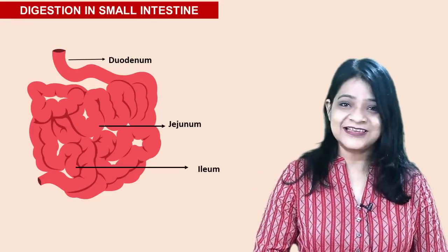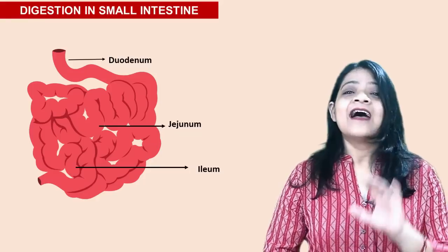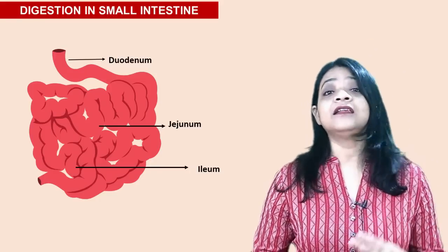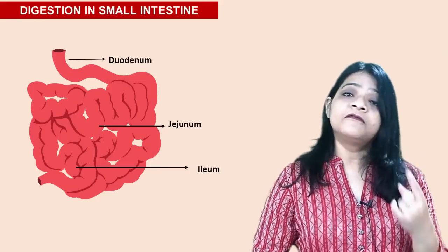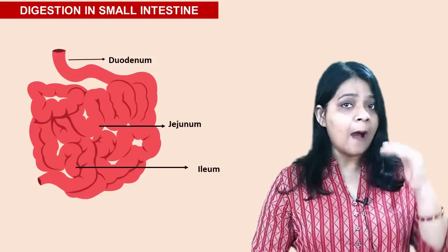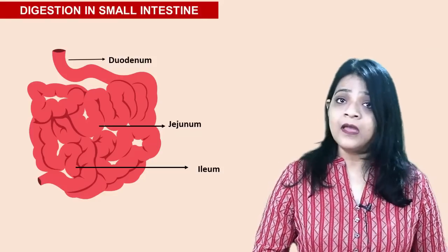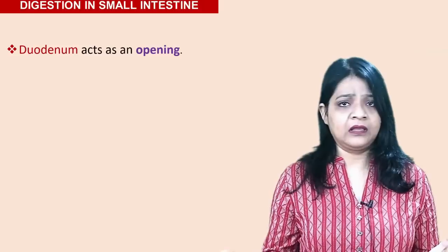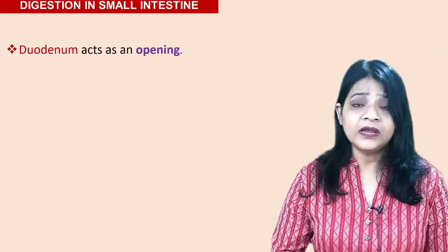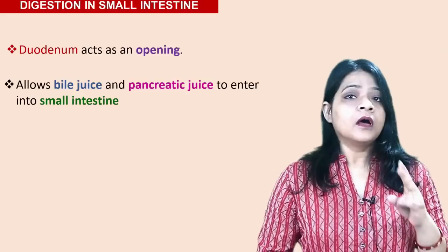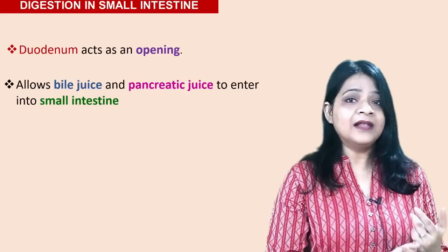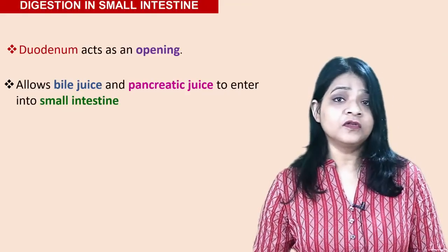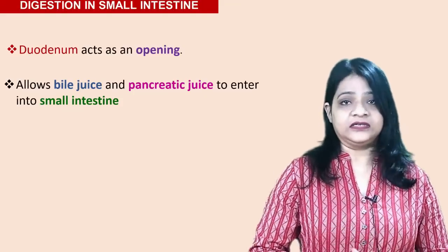In human beings, the small intestine is divided into three segments: the first one is the duodenum (the upper part), the middle part is the jejunum, and the bottom part is called the ileum. The duodenum acts as a duct, meaning it acts as an opening for two types of juices — bile juice and pancreatic juice — to enter into the small intestine.